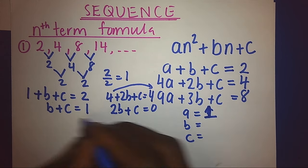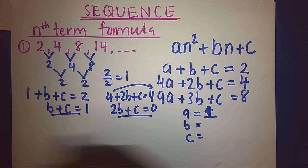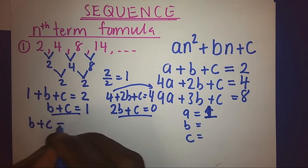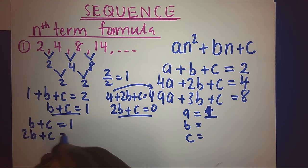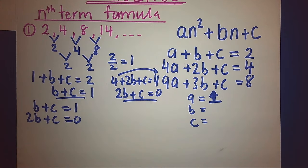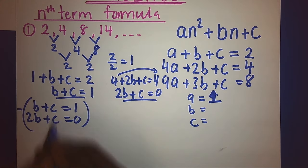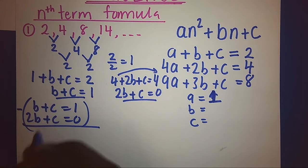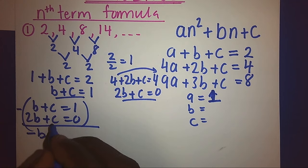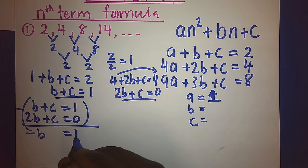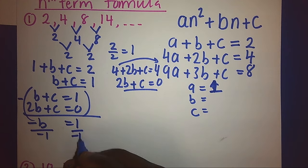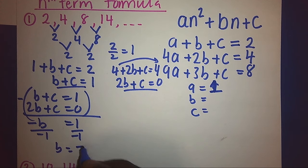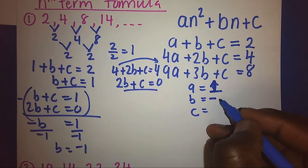Now this is my first equation: b + c = 1, and this is my second equation: 2b + c = 0. Then I can solve them simultaneously. I eliminate c by subtracting equation 1 from equation 2. I get negative b = 1 − 0, so when I divide by negative 1, I get my b = −1.